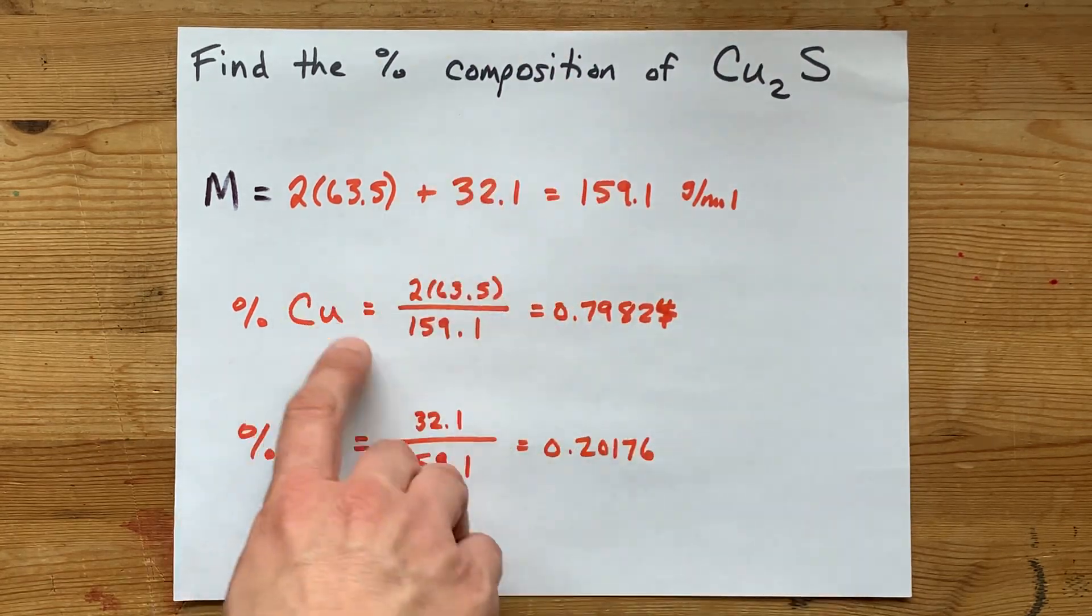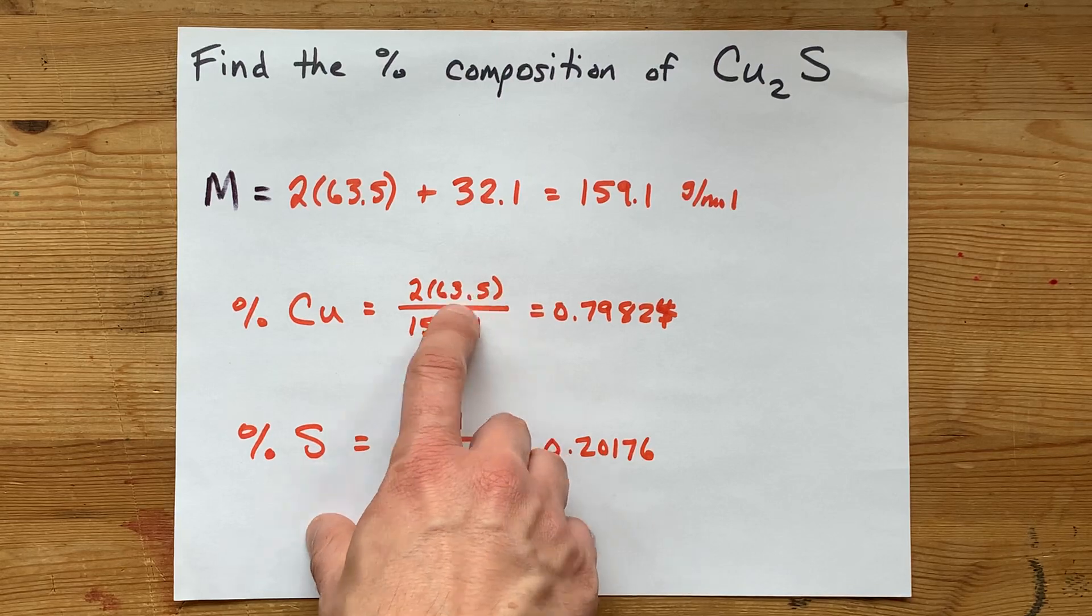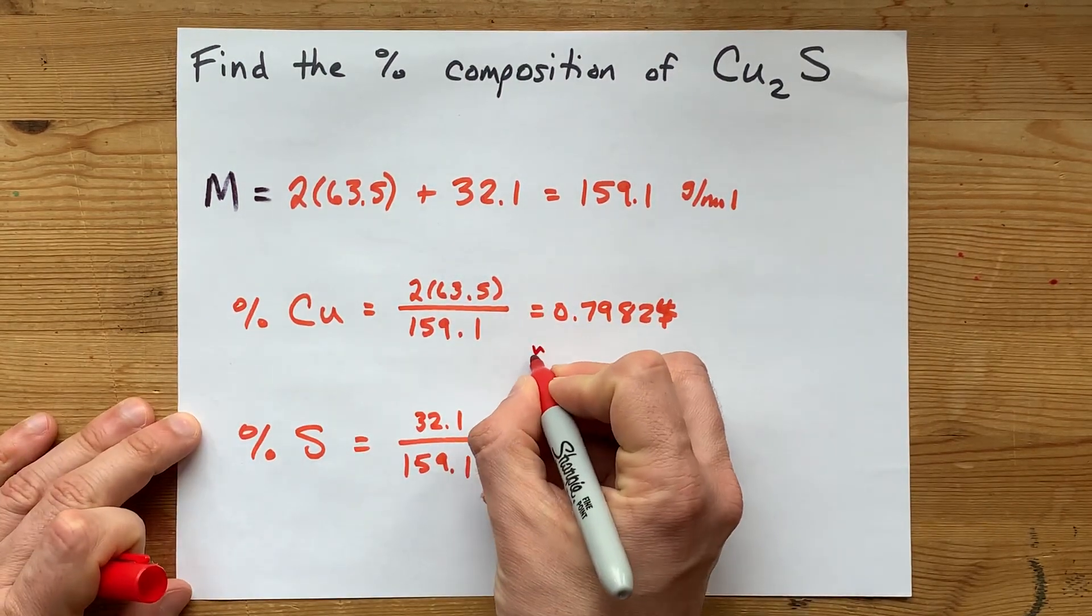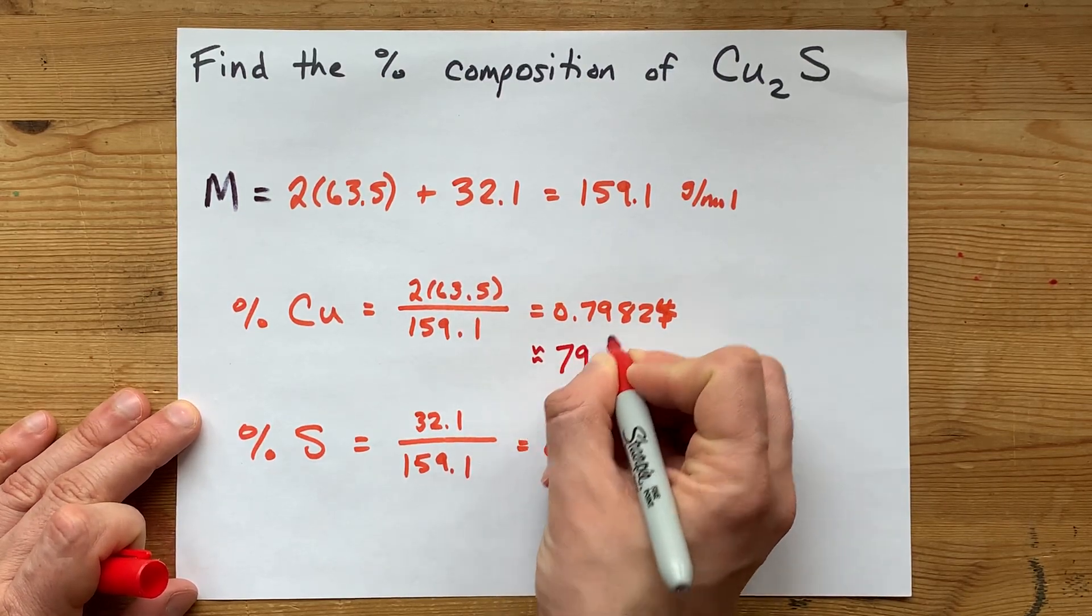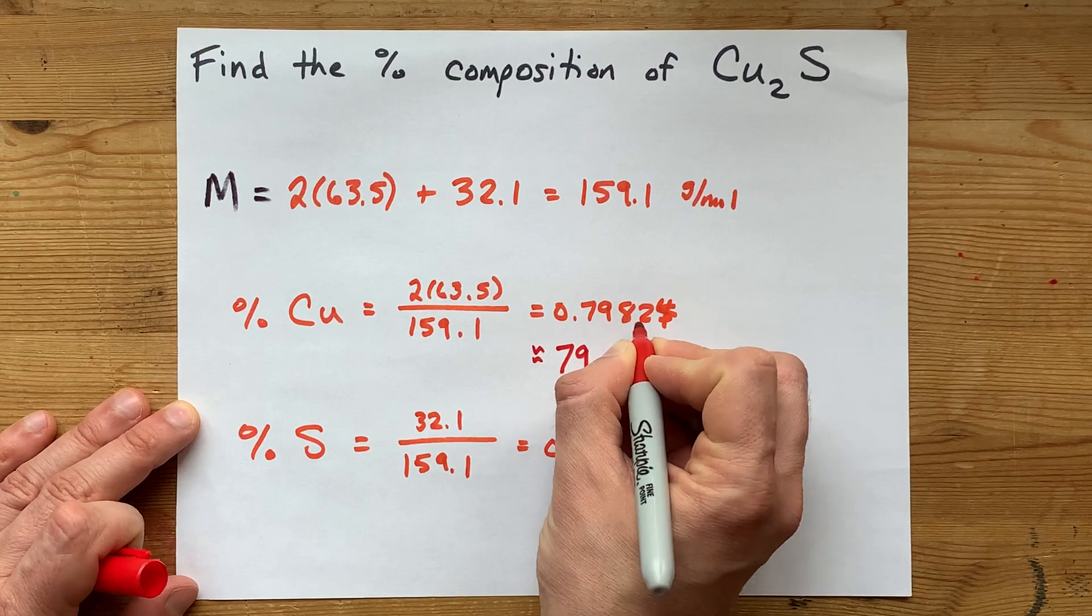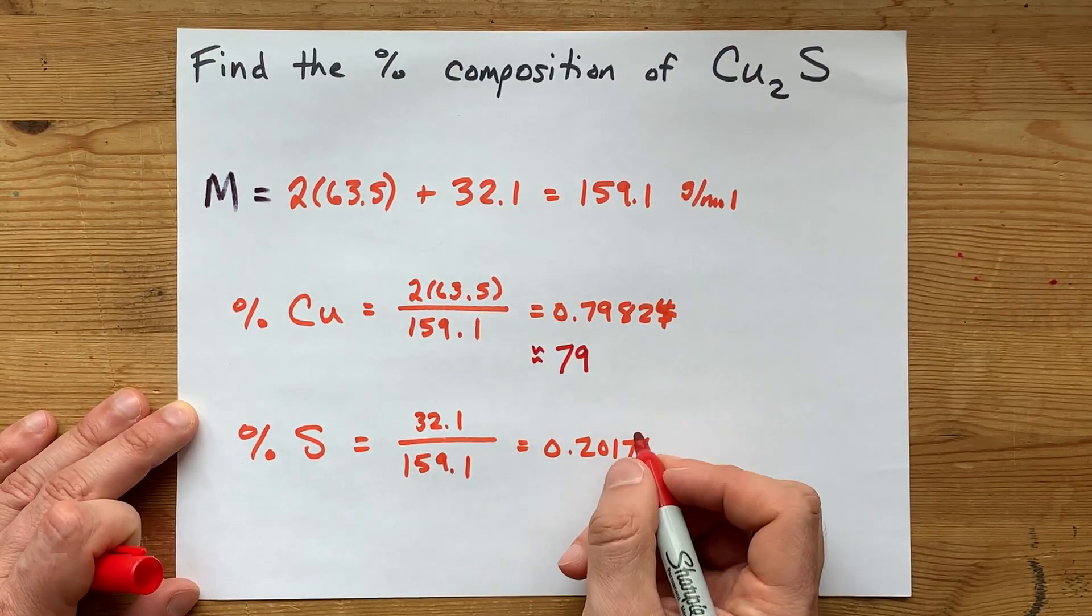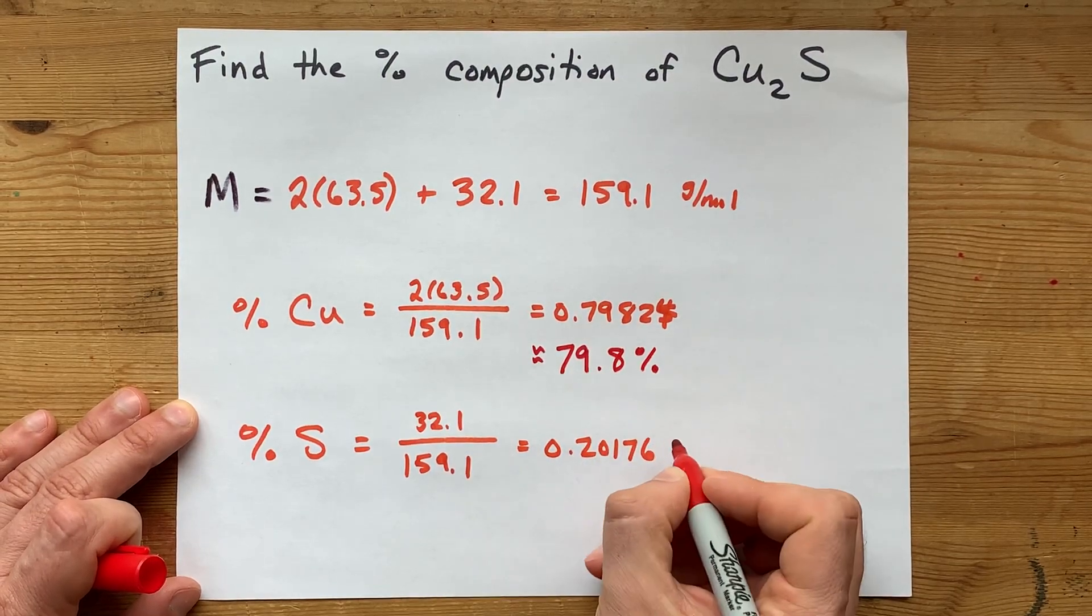But then, in each of the calculations here, that number with only three significant digits rears its head again. So to round this properly, we're going to take one, two, and then the third digit. It gets rounded down because what comes after it is less than five. So this is 79.8 percent copper.